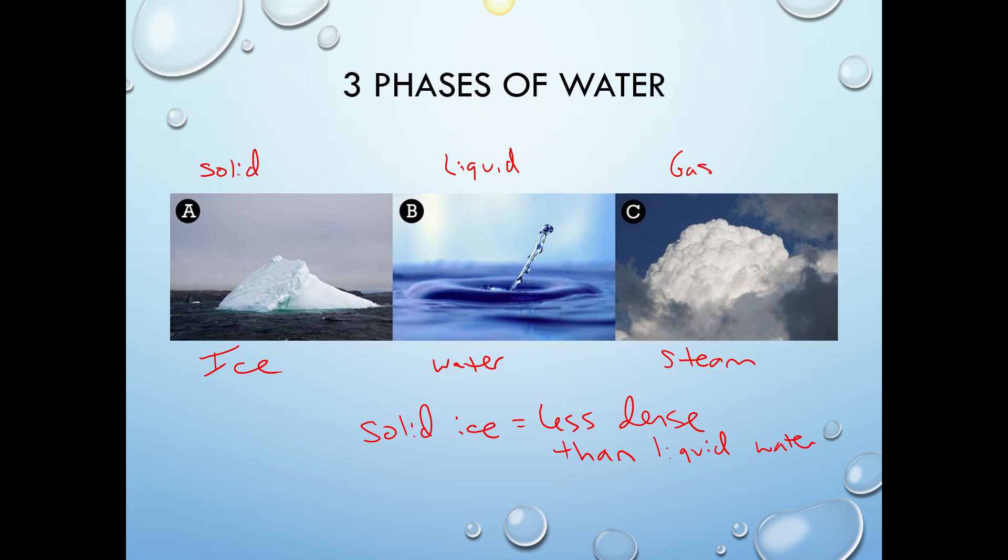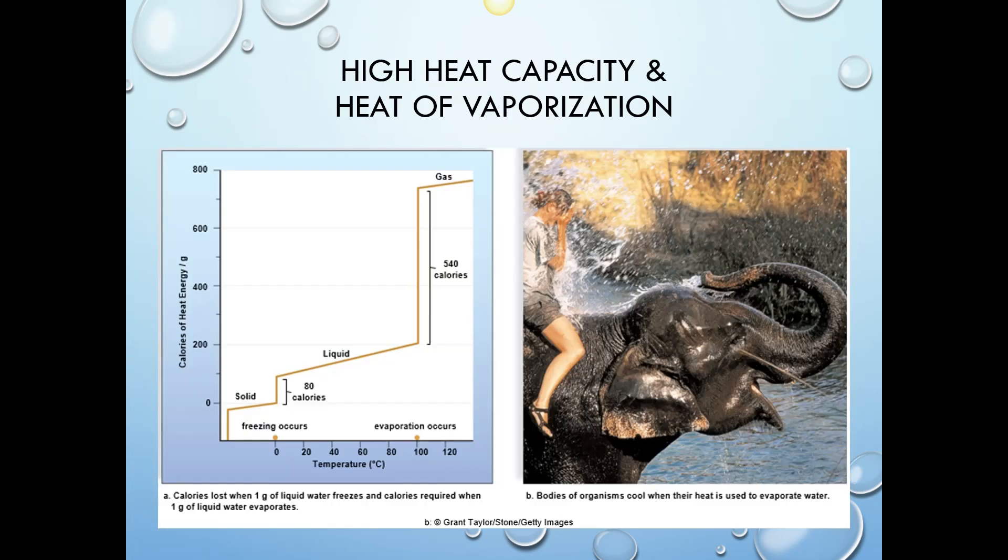Water has six properties. We just went through the polarity and the phases of water and how ice is less dense than liquid water. High heat capacity and high heat of vaporization are two separate properties, but we'll lump them together because this graph shows some common trends.